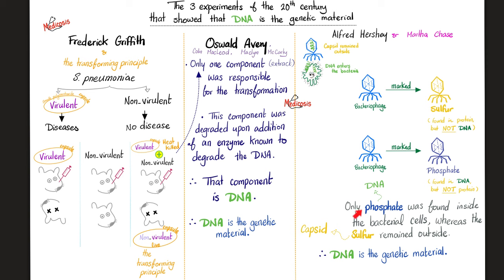Therefore, who is the genetic material? DNA. Why did the sulfur remain outside? Because sulfur is in the capsid — the capsid is protein, not DNA. Therefore, DNA is the genetic material.